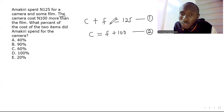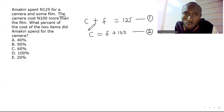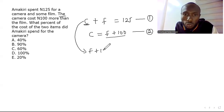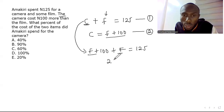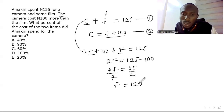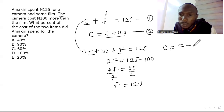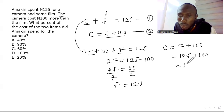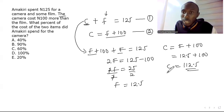We solve by substitution: replace c in equation one with f + 100. So: (f + 100) + f = 125, which gives 2f = 25, so f = 12.5 naira. The cost of the camera is then c = 12.5 + 100 = 112.5 naira.